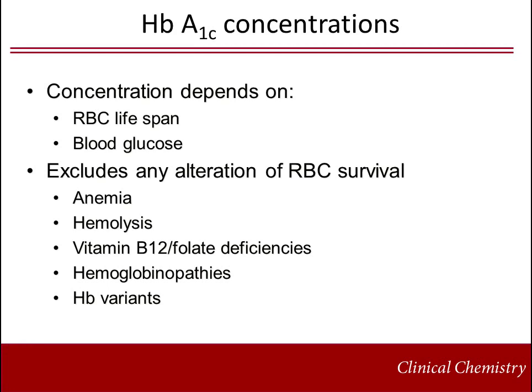The concentration of hemoglobin A1C depends on several factors. The major determining factors are the lifespan of the red blood cell and how long the hemoglobin molecule is exposed to glucose. It is also thought that the permeability of the red blood cell to glucose influences the amount of glycation. In general, it is accepted that hemoglobin A1C concentrations represent average glucose levels over the preceding 8 to 12 weeks.